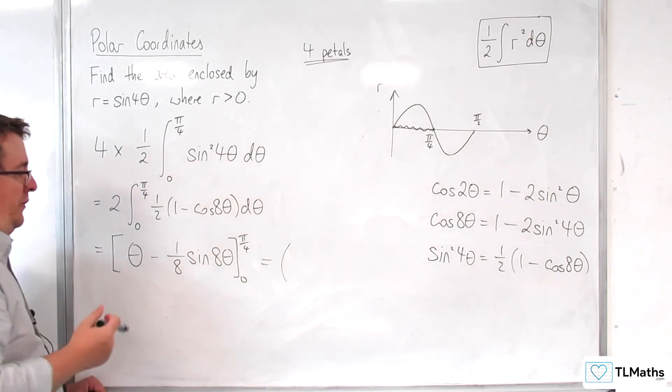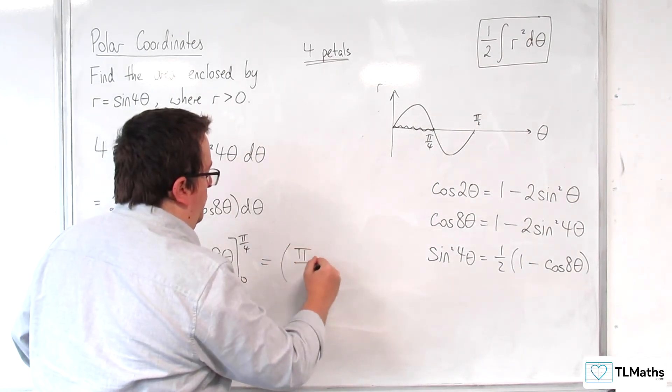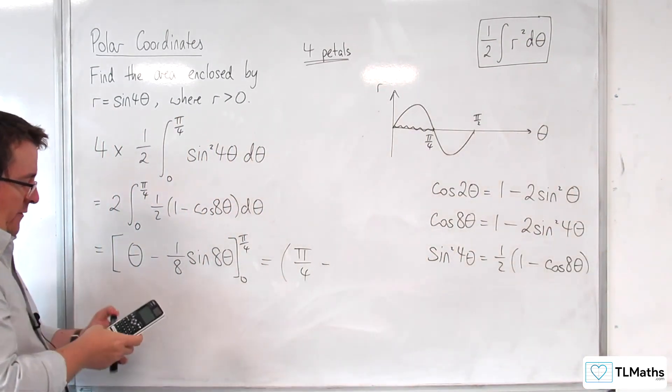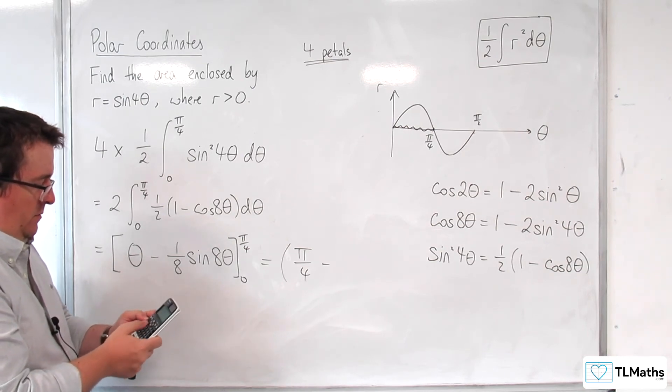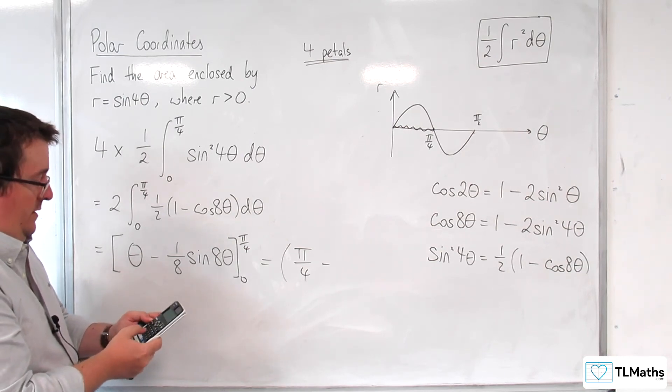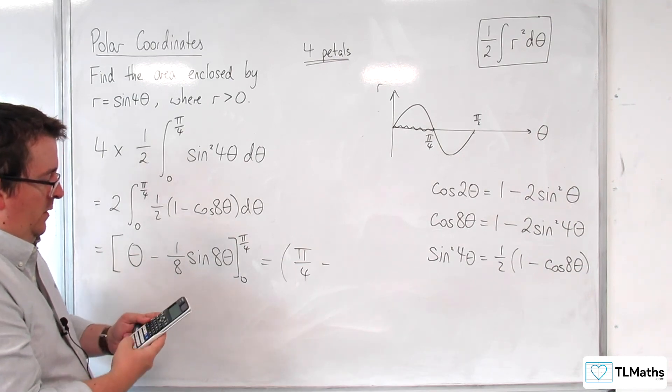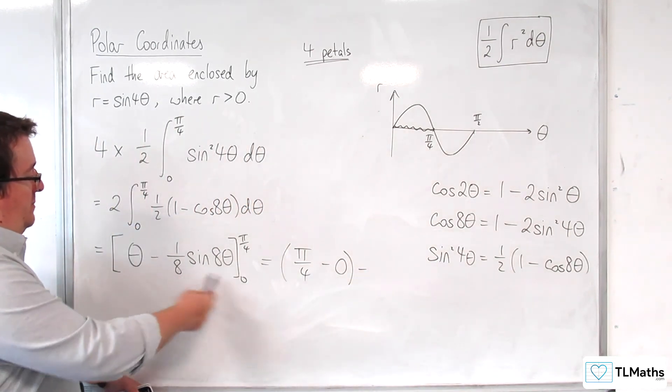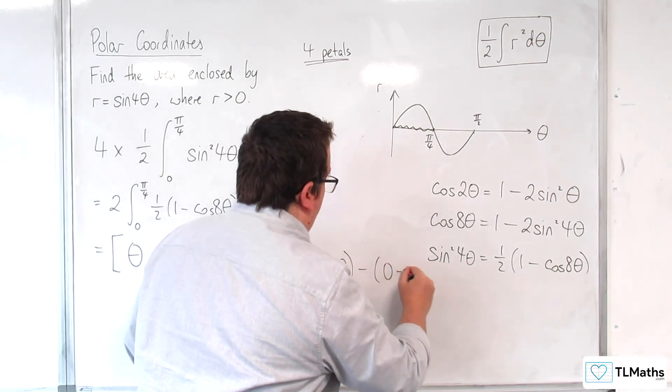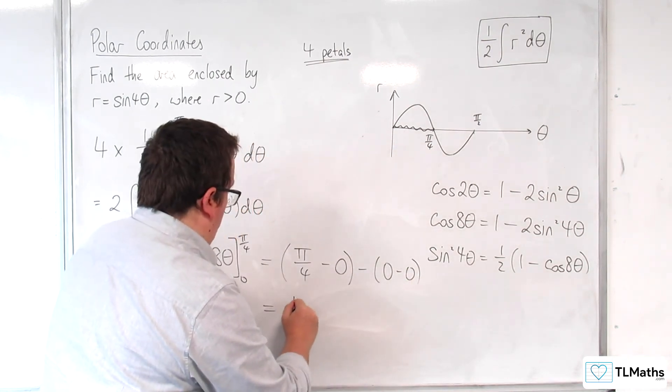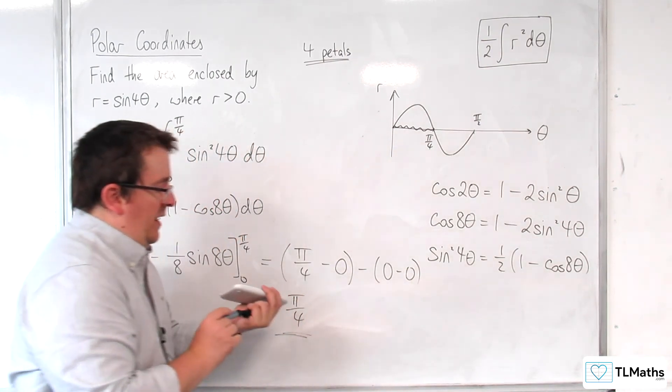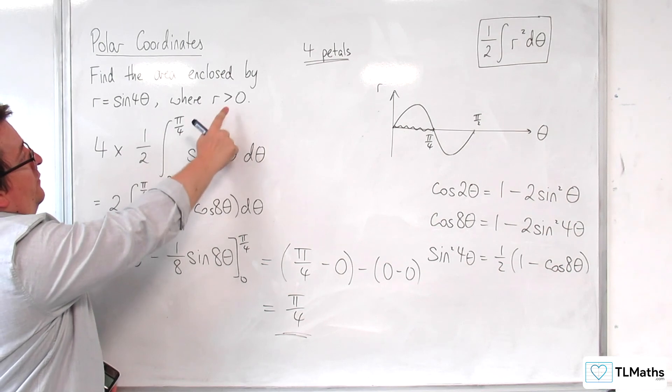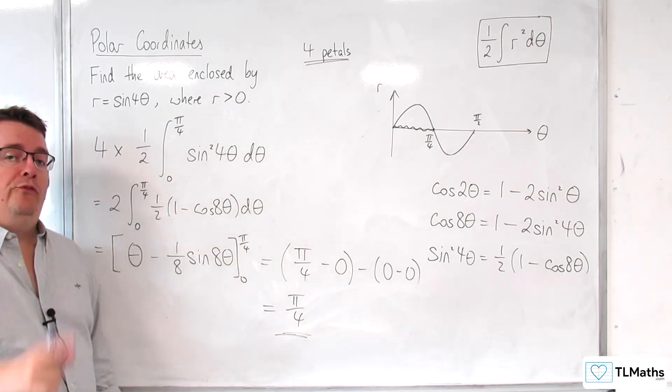Okay, so now I've got to start substituting in. I've substituted in the pi over 4, I'm going to get pi over 4, take away 1 eighth times sine of 8 times pi over 4, and that gets me 0. And then substituting in the 0, we get 0 and 0, so pi over 4 is the answer I'm looking for. So that is the area enclosed by this curve when r is positive, and that includes all four petals.